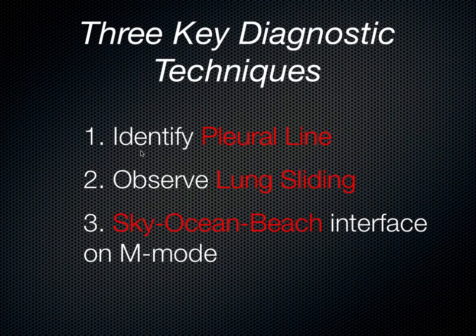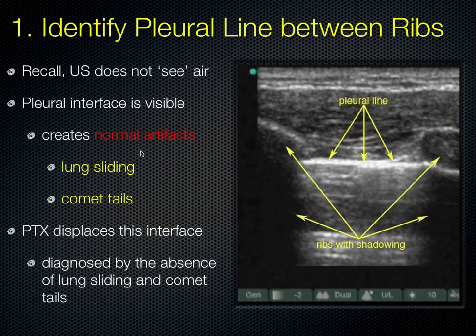You're also going to be looking for something called Sky-Ocean-Beach, which is a representation seen when you use M-mode (motion mode). In a still picture you have a rib, rib shadow, pleural line, and the A line. You can't appreciate sliding in a still picture, but the pleural interface is visible — if it is moving, you will see sliding. You might see some minor B lines showing the interlobular septae are coming up to the chest wall. When there's a pneumothorax, this whole interface is affected and can create significant changes.